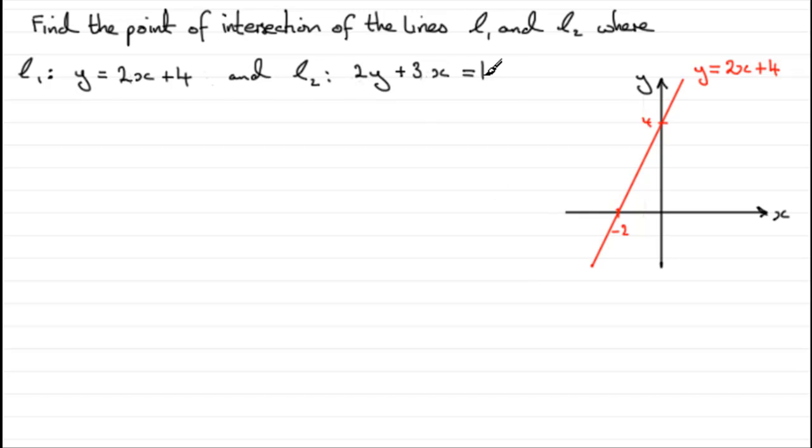And for line L2, we could rearrange it similarly in the form y equals mx plus c and sketch it from there. Or we could just find out where it crosses the x and y-axis, which is by putting x and y individually equal to 0. Whatever system we use would get something like this.